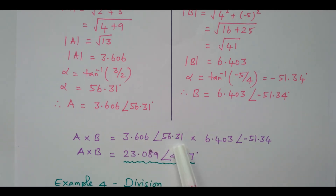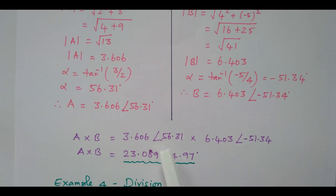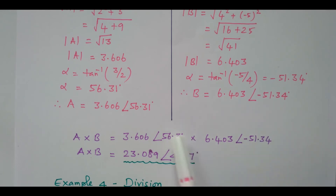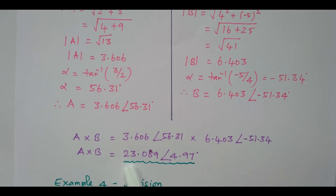56.31 is added with minus 51.34. Since it is already negative, it becomes subtraction, giving 4.97. The general format is we have to add both angles for multiplication. So we got 23.089 with an angle of 4.97 — the multiplication of A and B.